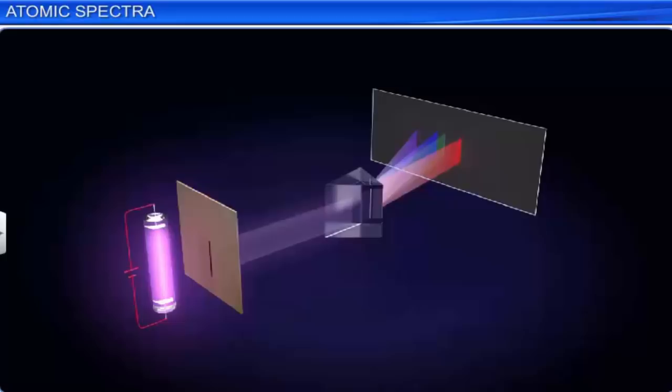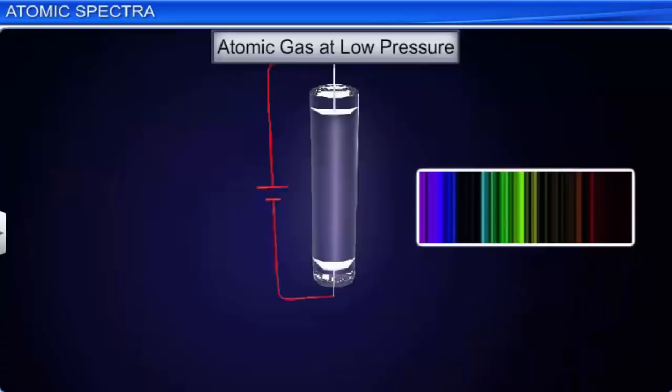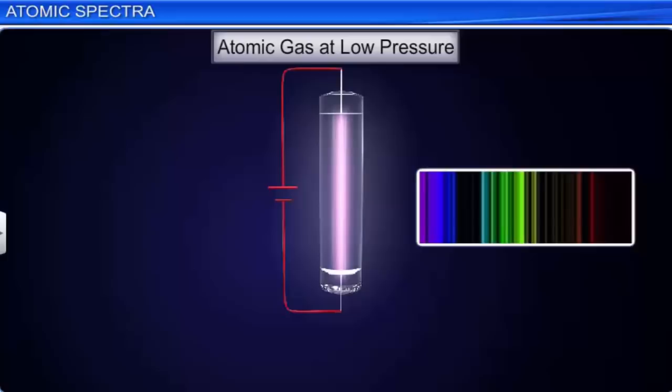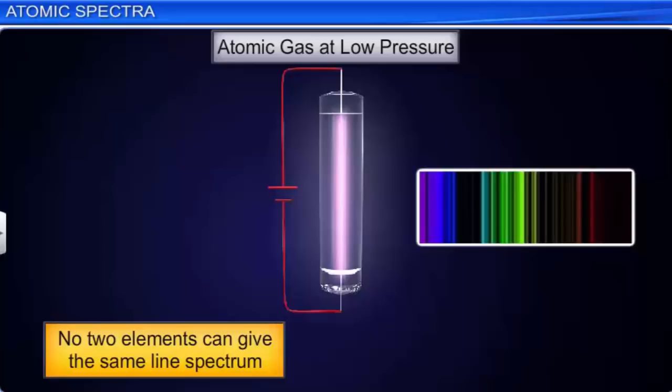When an atomic gas or vapor is excited at low pressure by passing electric current through it, it emits radiation containing certain specific wavelengths only. Such a spectrum is called the discontinuous emission line spectrum. The line spectrum is characteristic of the element emitting it — no two elements can give the same line spectrum. Hence, it is also called the fingerprint spectrum. An emission line spectrum consists of bright lines on a dark background.